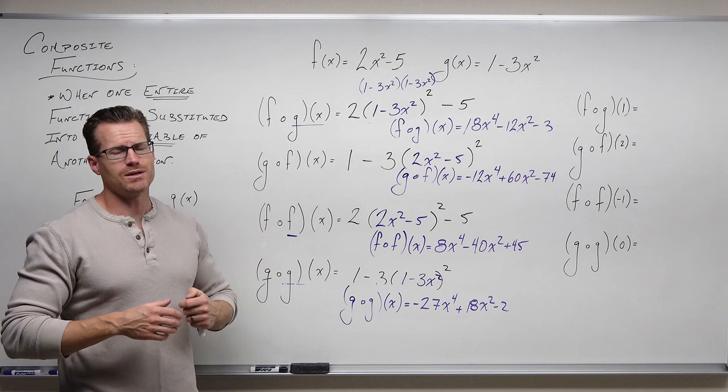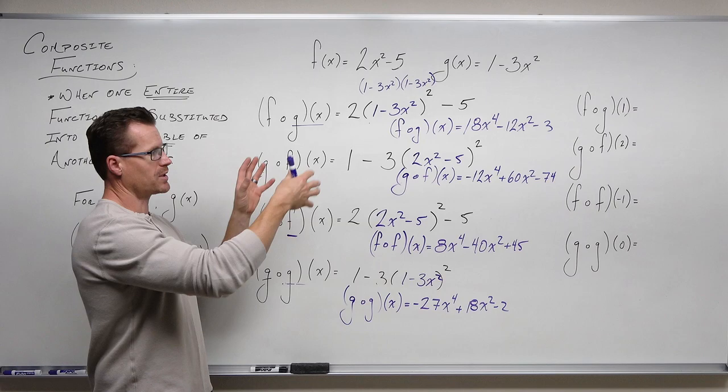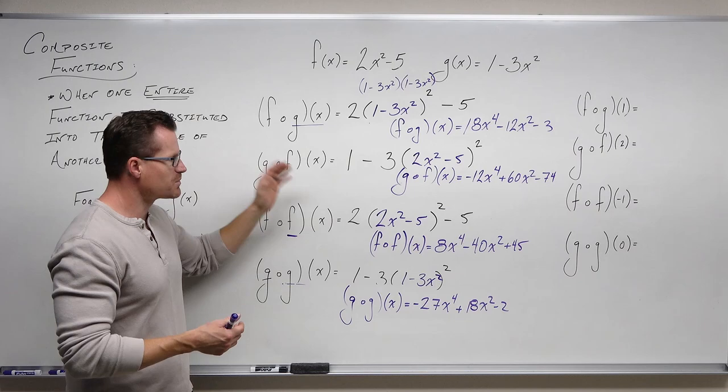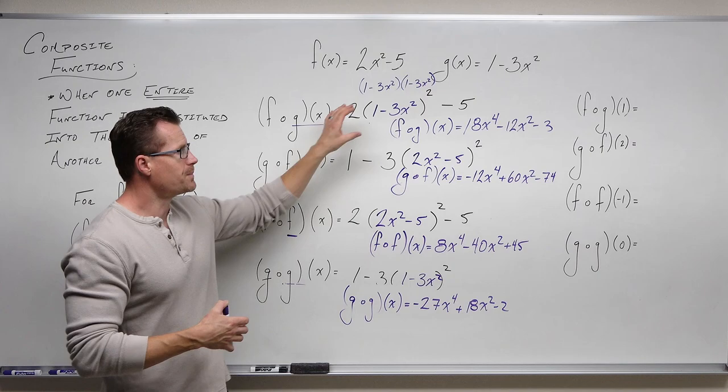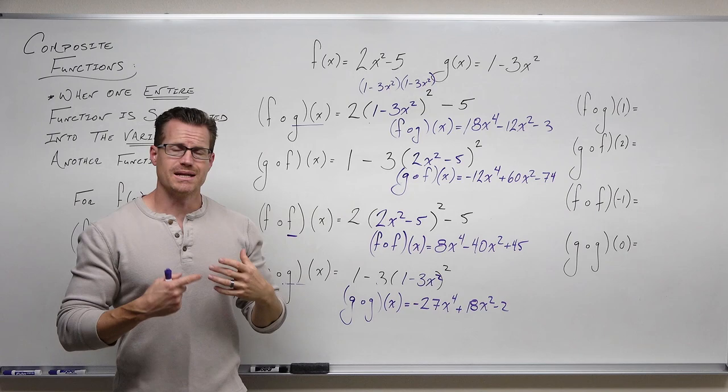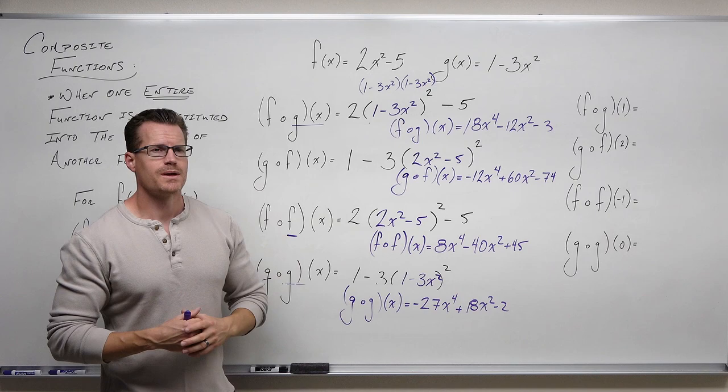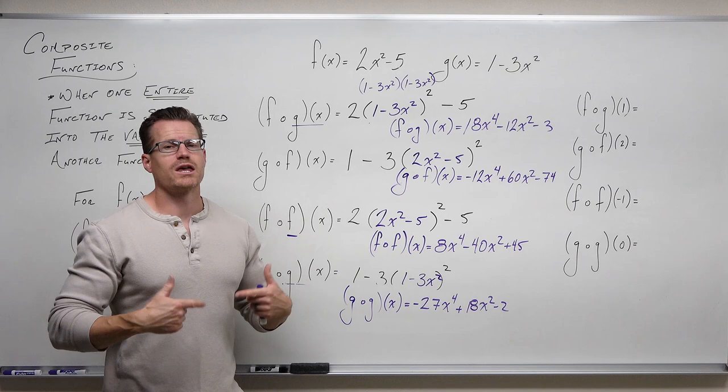That covers every permutation of our compositions: f of g takes g and plugs into f; g of f takes f and plugs into g; f of f takes f onto itself; and g of g takes g onto itself. The domain of every one of these compositions is all real numbers, because we didn't create any fractions, square roots, or logarithms, and the domain of both initial functions is all real numbers. We'll see some different cases in the next video.